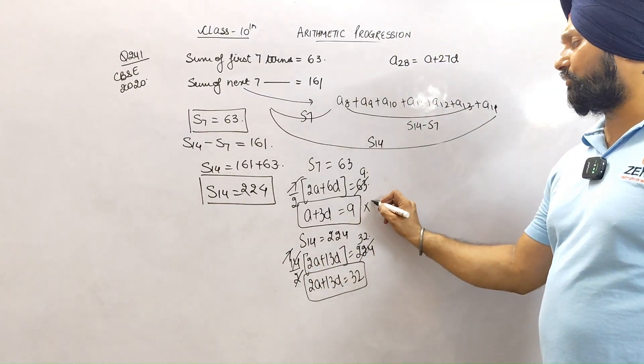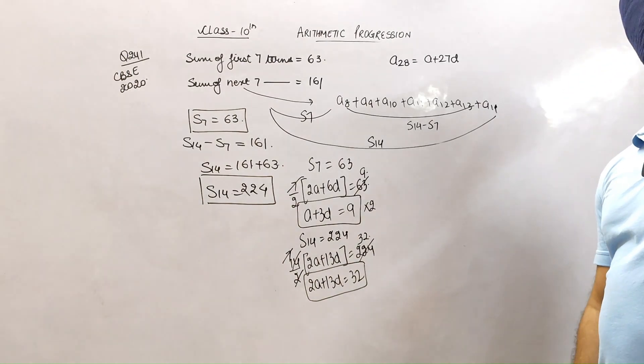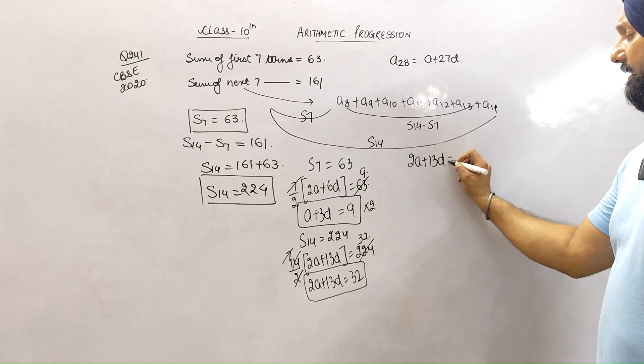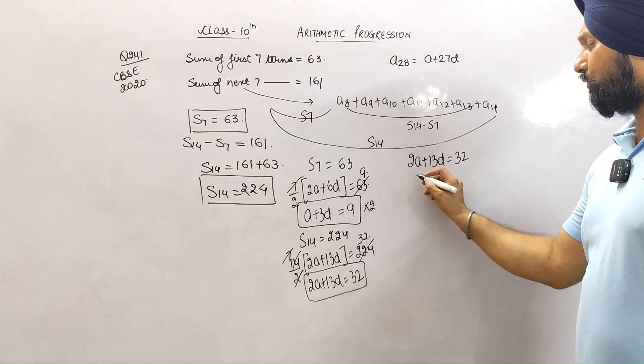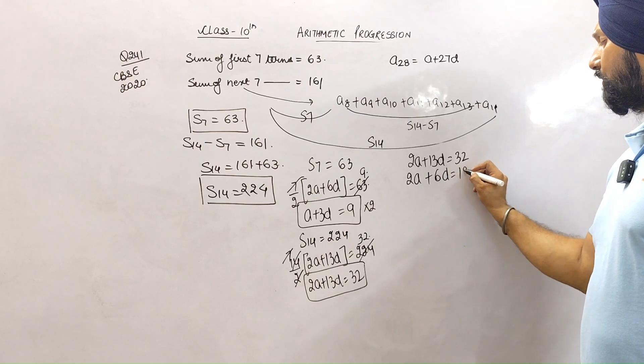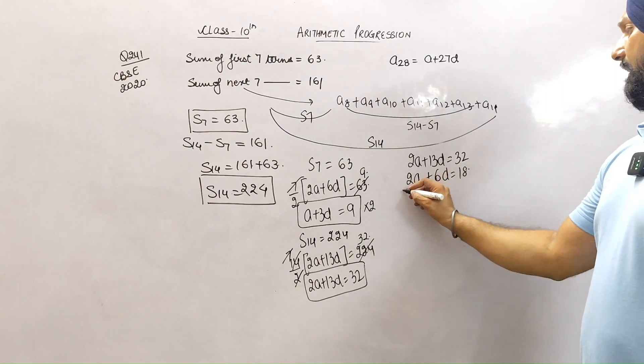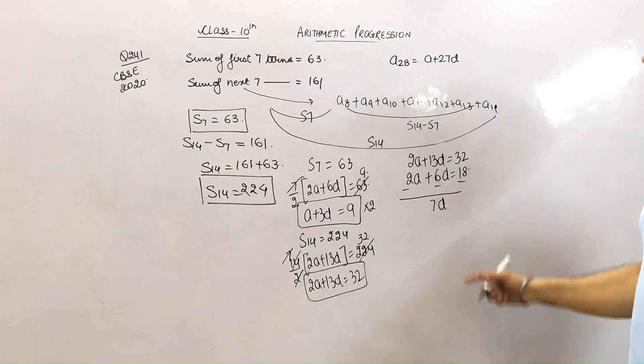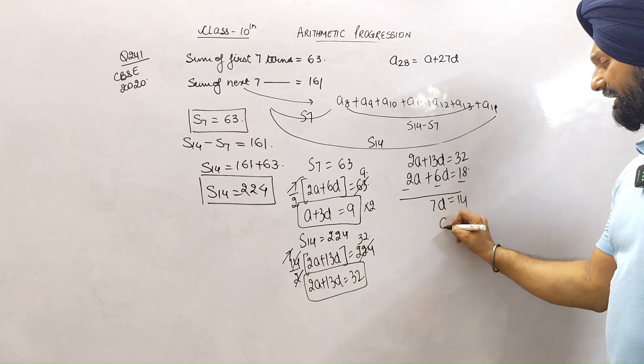We have two equations: 2a + 13d = 32 and 2a + 6d = 18. Subtract: 13 - 6 is 7, and 32 - 18 is 14. So 7d = 14, which means d = 2.